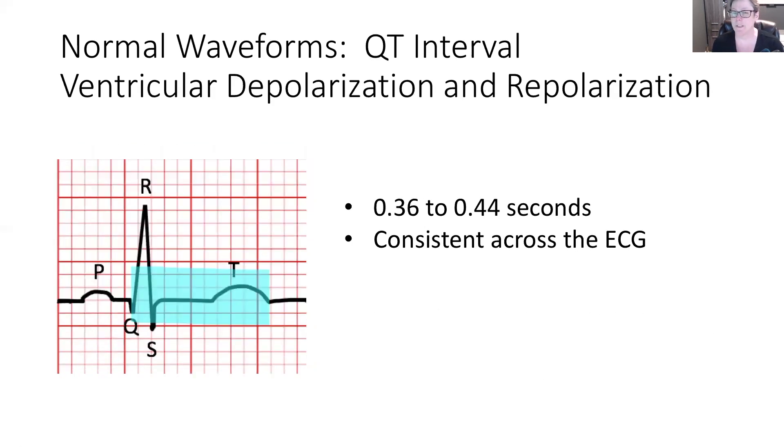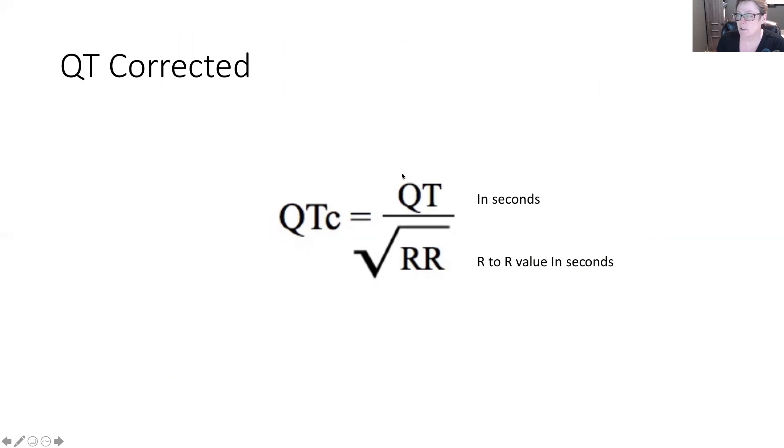The next waveform is called the QT interval. So we want to measure the entire cycle it takes for the ventricles to contract and relax. So here we're seeing that the energy is being released from the AV node, traveling down through the ventricles, contracting, and disbanding. It should be taking between 0.36 to 0.44 seconds, and consistent all the way across the ECG. Now sometimes we have to correct this number, and it happens when we have a really slow heart rate and a really fast heart rate. The QT corrected is equal to the measurement you have of the QT in seconds. So how long was that contraction and relaxation phase? And then we divide that by the square root of the R to R value in seconds.